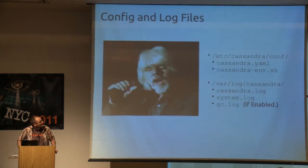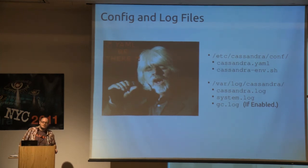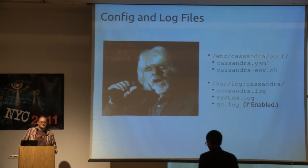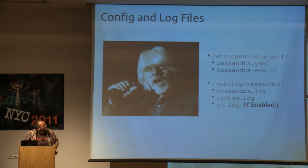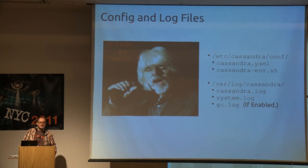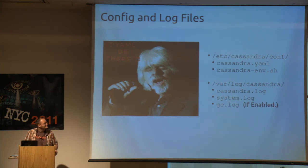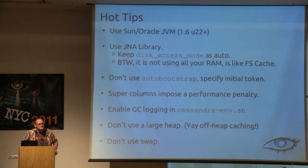Configuration is in /etc/cassandra/conf. You've got your YAML file — as of 0.7 upgraded from a harder-to-read XML file. All your environment stuff — heap, JMX options — is in the cassandra-env script. Then you've got your logs, Cassandra log, system log. Very important information.